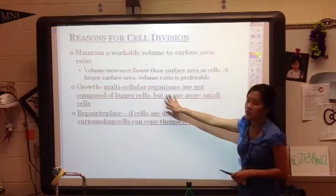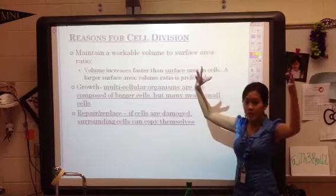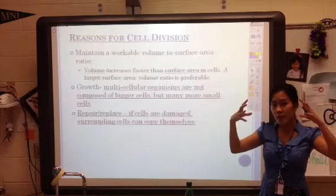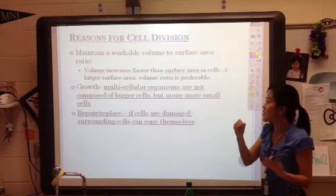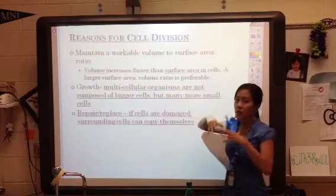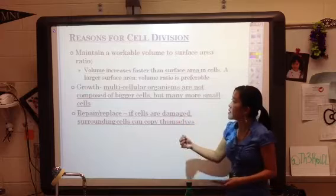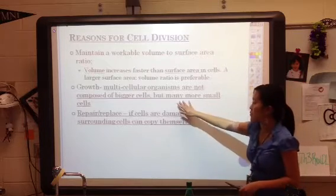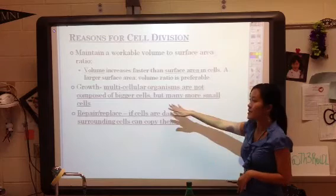The next reason for cell division is simply for growth. The bigger the organism doesn't mean their cells are bigger — most cells are about the same size in general. So the bigger the organism, that just means the more cells they have; they're still made up of many, many small cells.